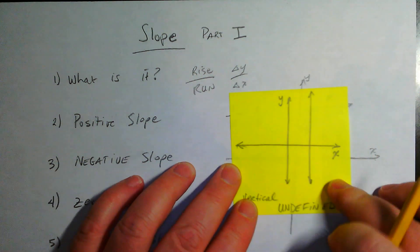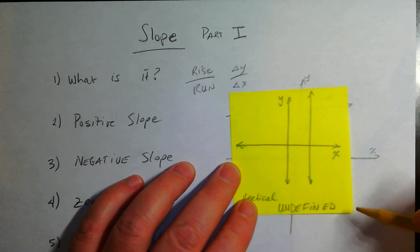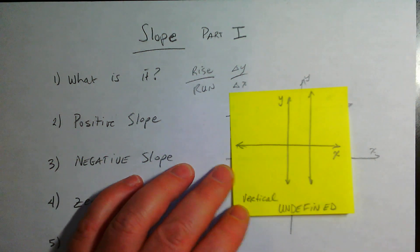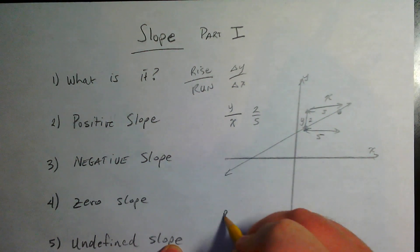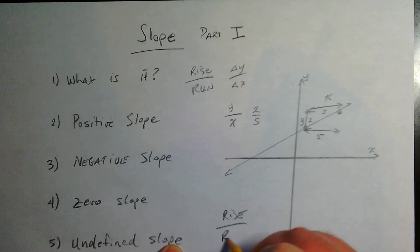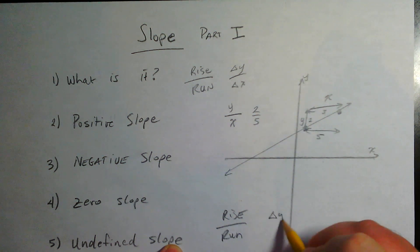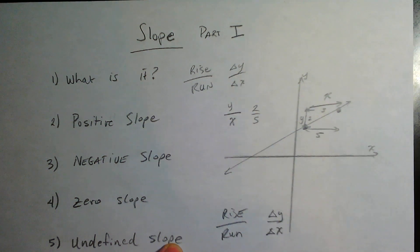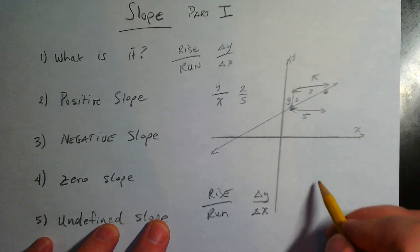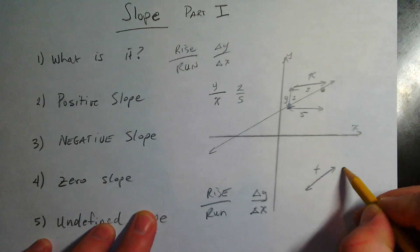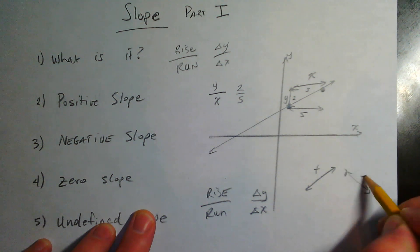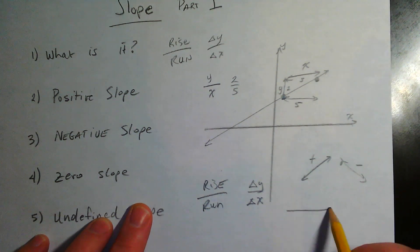To summarize, here's what we've got. Slope is rise over run. It's change of y over change of x. It's how something is changing over time. A positive slope goes up from left to right. A negative slope goes down from left to right. A zero slope is horizontal.